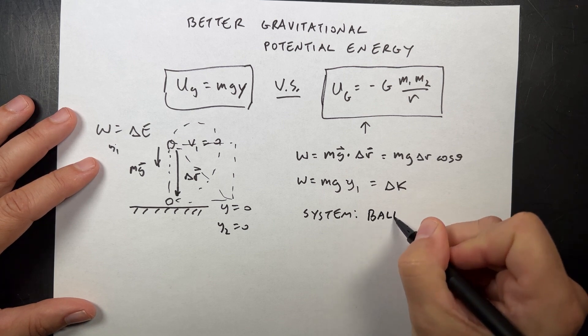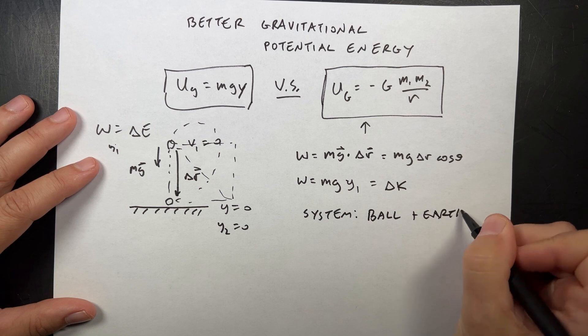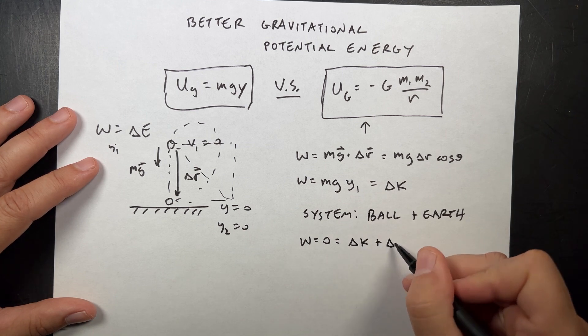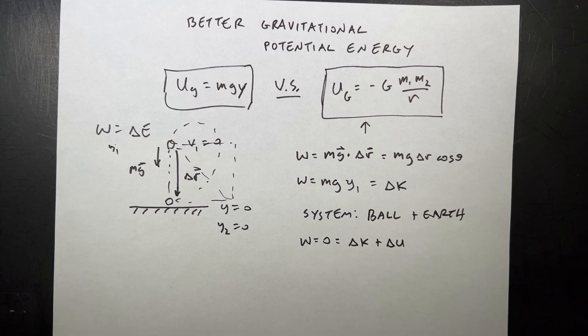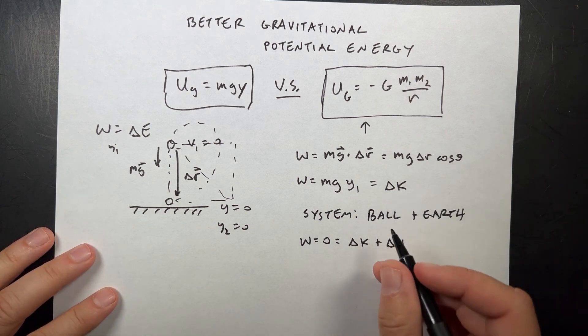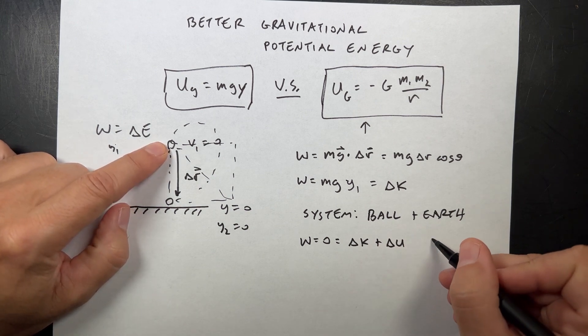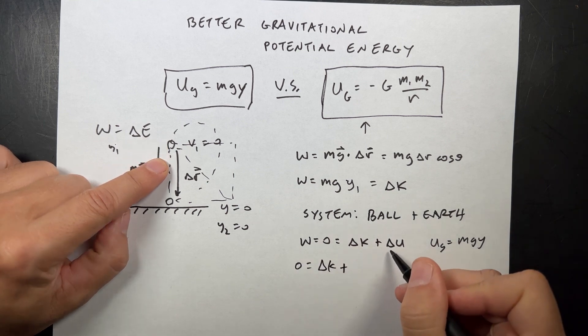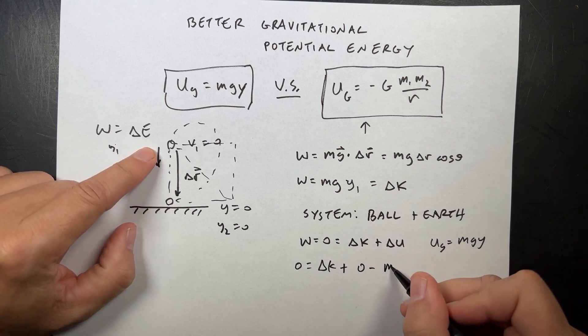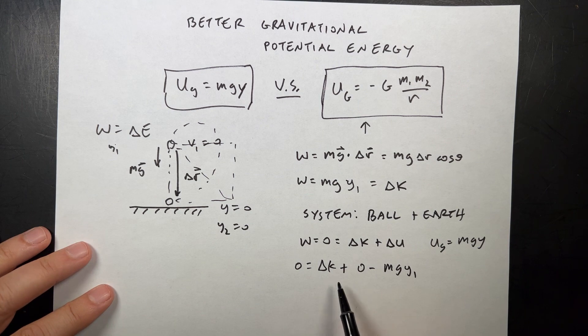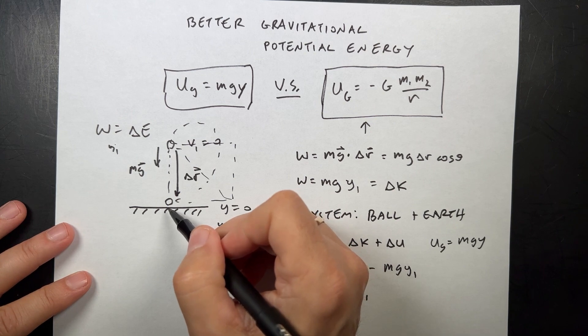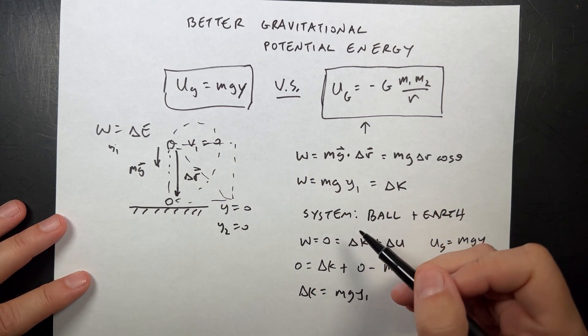System of the ball plus the earth. Then I can say the work is zero, and that's going to equal a change in kinetic plus a change in gravitational potential. So let's see if we get the same thing. I want to find the same change in kinetic energy. The change in potential: I'm going to define U_g as mgy. So this is zero equals delta K plus the final potential down here, which is zero, minus the initial potential, which is mgy1. And then if I solve that for delta K, I get the same thing.